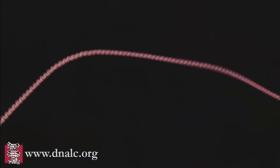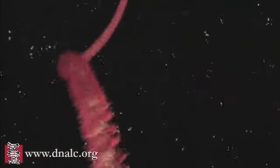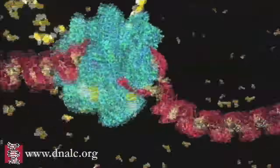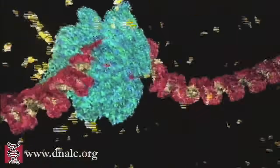Contact between the activator proteins and the initiation complex releases the copying mechanism. The RNA polymerase unzips a small portion of the DNA helix, exposing the bases on each strand.